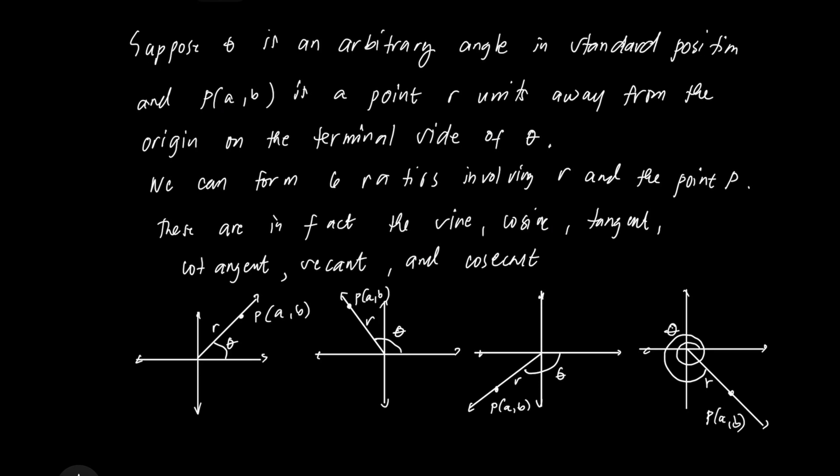Consider the four figures below the rectangular coordinate system. Suppose theta is an arbitrary angle in standard position and P with coordinate AB is a point R units away from the origin on the terminal side of theta. We can form six ratios involving R and the point P. These ratios are, in fact, the sine, cosine, tangent, cotangent, secant, and cosecant of theta.